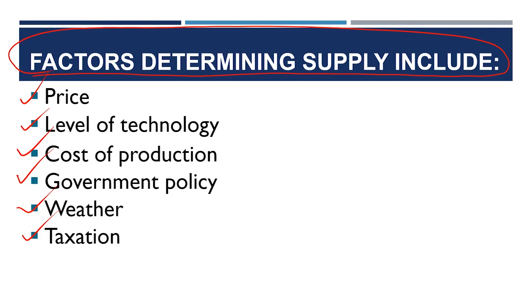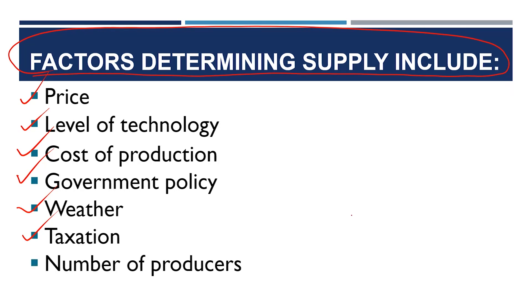Taxation is another factor that affects supply. If government reduces taxation, there will be an importation or influx of raw materials for production, and this will increase the supply of goods and services. But when goods are heavily taxed, it discourages production because heavy taxation hinders importation and production of that commodity. Number of producers also amounts to competition — keen and lively competition is one of the factors that affects supply.